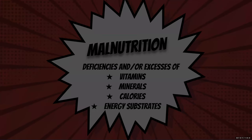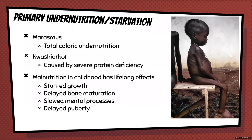Primary undernutrition or starvation is usually what people think of when they think of malnutrition. You can have marasmus, which is total caloric undernutrition, or you can have kwashiorkor — that's when toddlers have big bellies due to effusions in their abdomen caused by protein deficiency. If you have protein deficiency, you have albumin deficiency; if you have albumin deficiency, you have low osmotic pressure, and the net flow of fluid is out of your capillaries — which causes those big bellies.